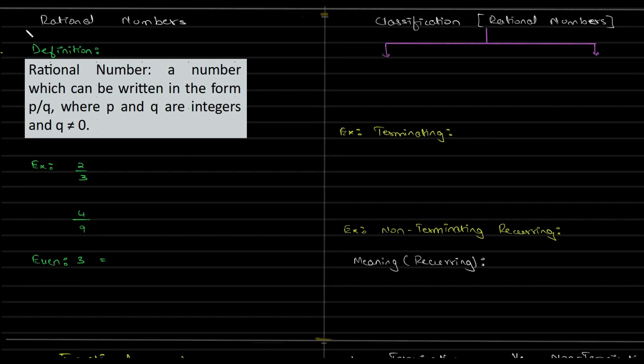We will be understanding rational numbers. Rational numbers are numbers which can be written in the form of p by q, where p and q are integers.